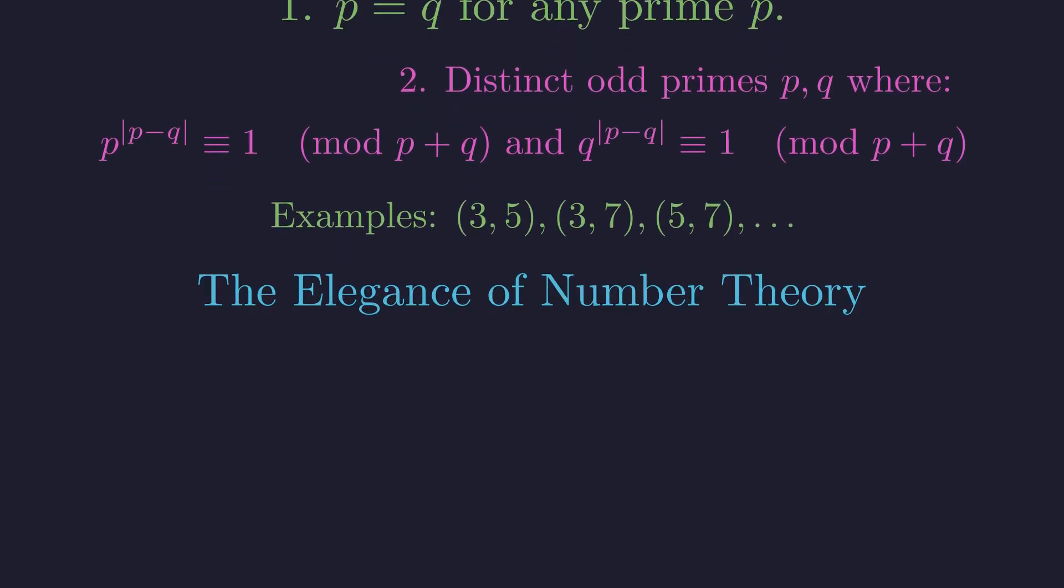What started as a simple question of divisibility led us on a journey through modular arithmetic, revealing a beautifully nuanced answer. It wasn't a single pair of numbers, but entire families of primes defined by hidden properties. This is the beauty of number theory.